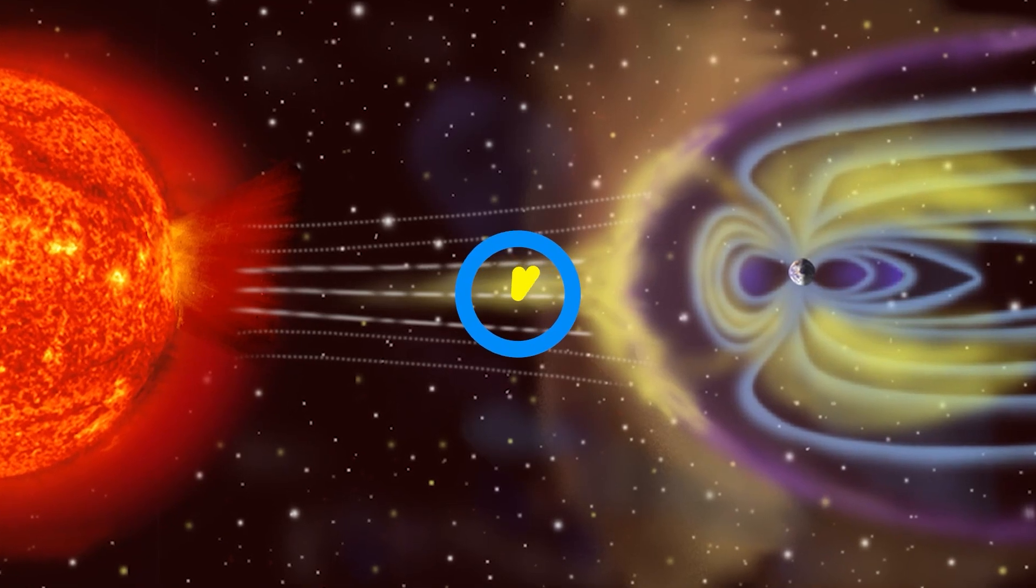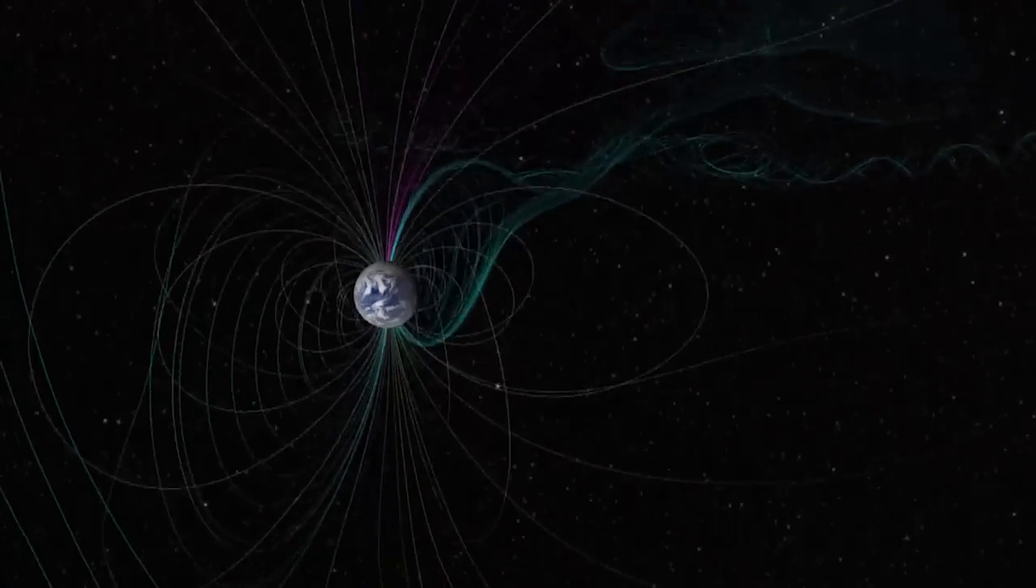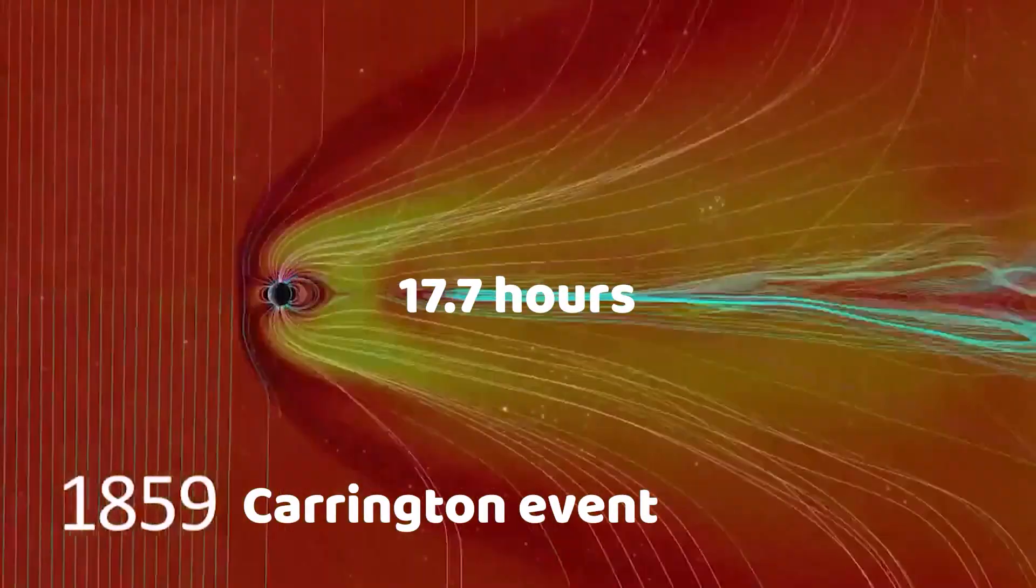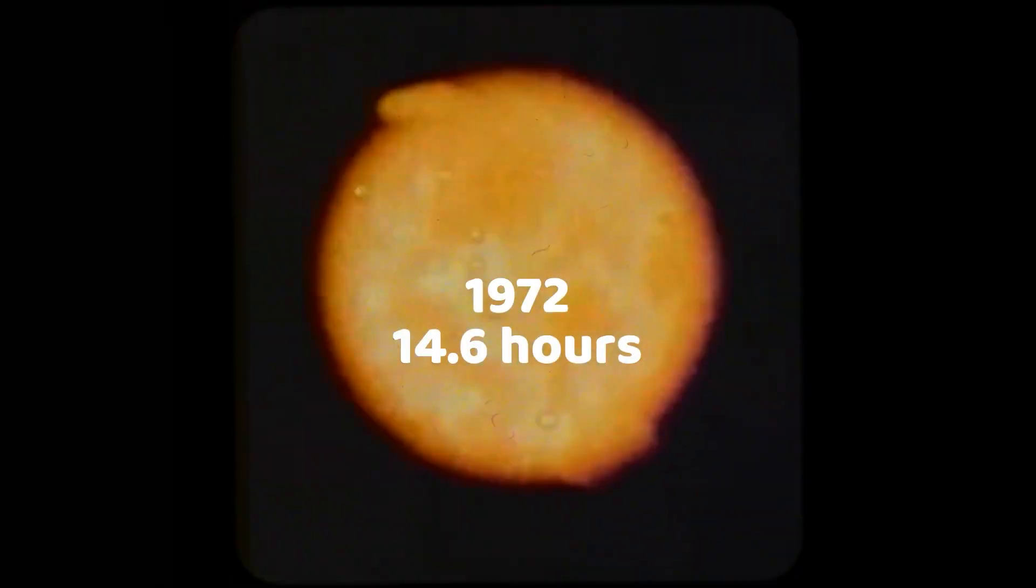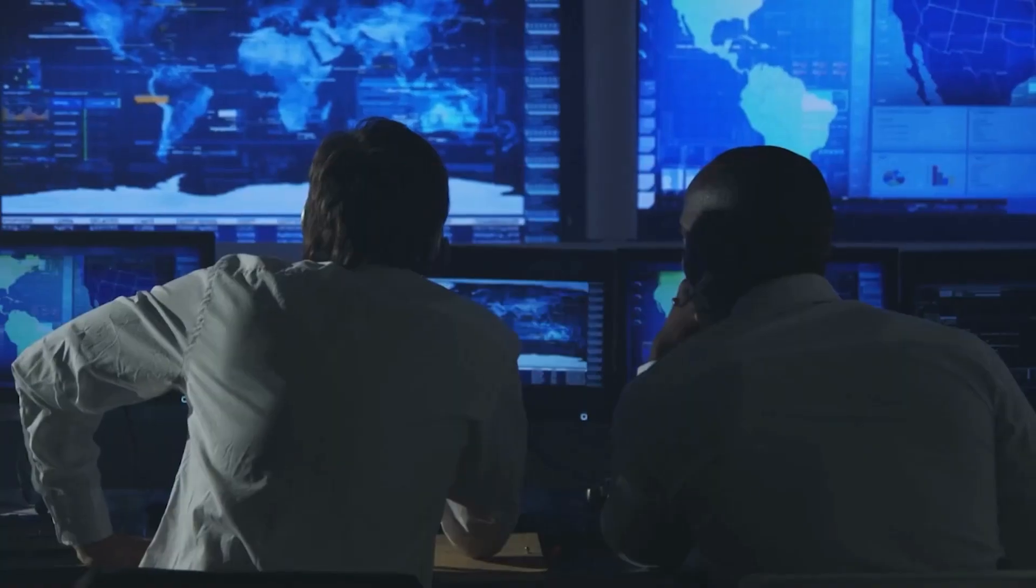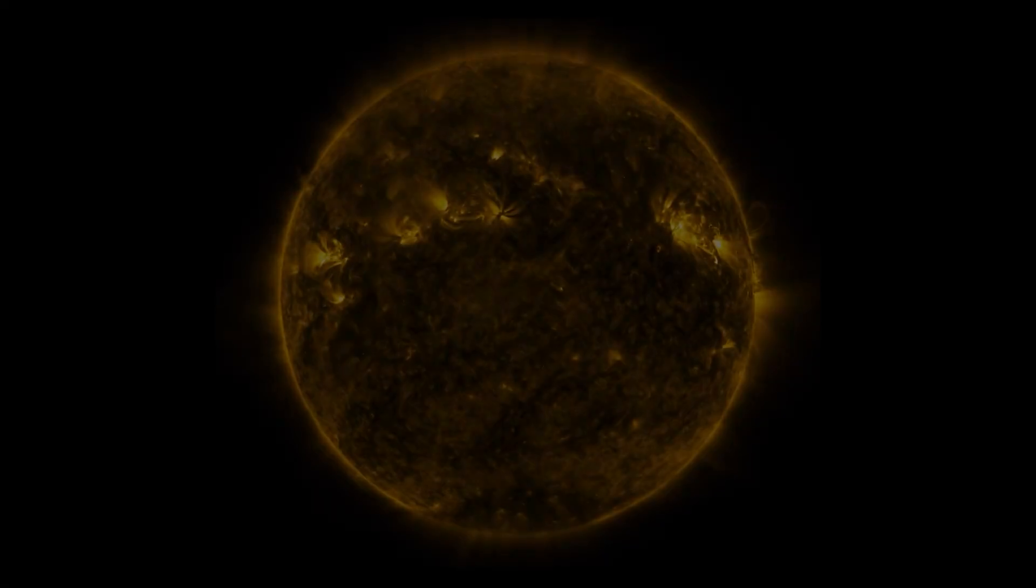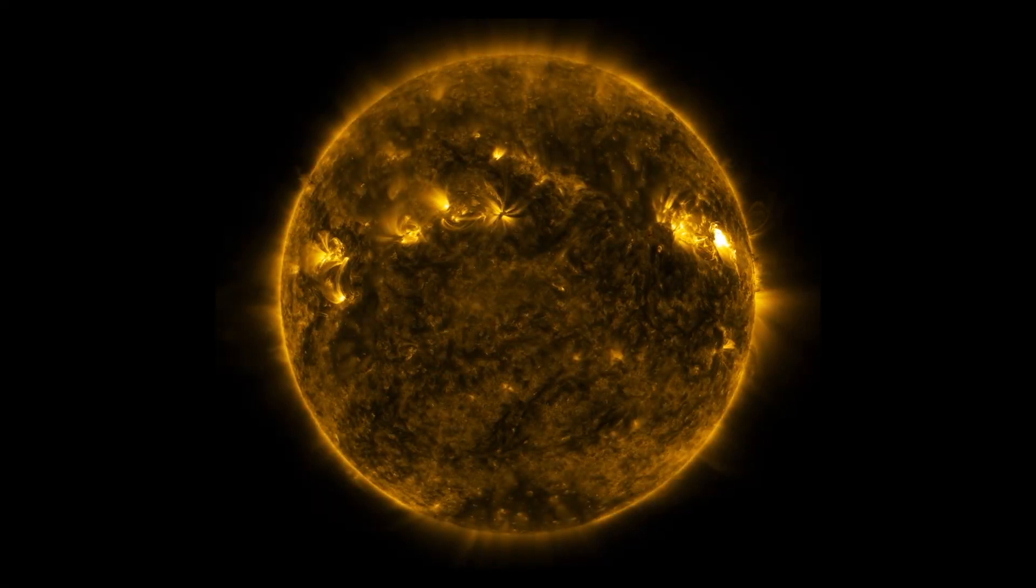How much time do we have before a G5 geomagnetic storm hits? After a solar CME, the time between a solar CME and a G5 geomagnetic storm ranges from 12 to 36 hours. The 1859 Carrington Event took about 17.7 hours to hit Earth. In 1972, a solar storm took 14.6 hours to hit Earth and eventually blew up 4,000 destructor water mines during the Vietnam War.